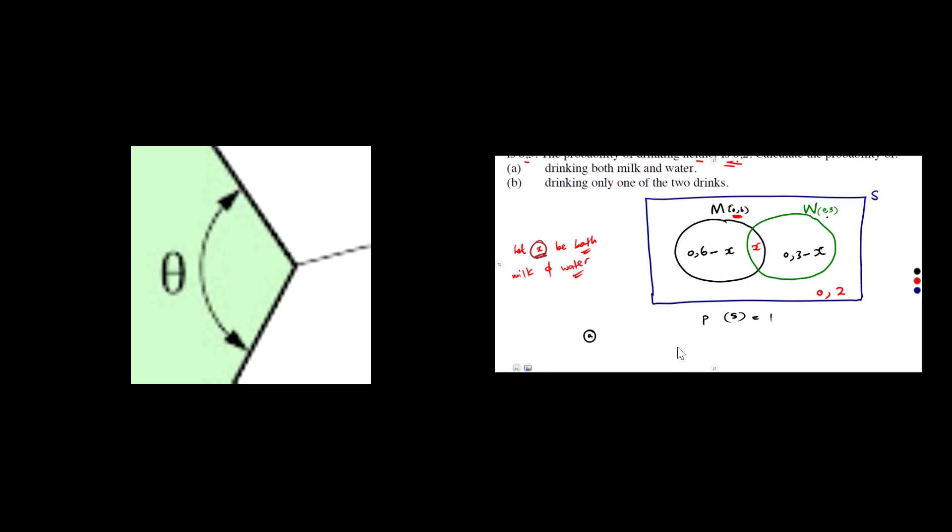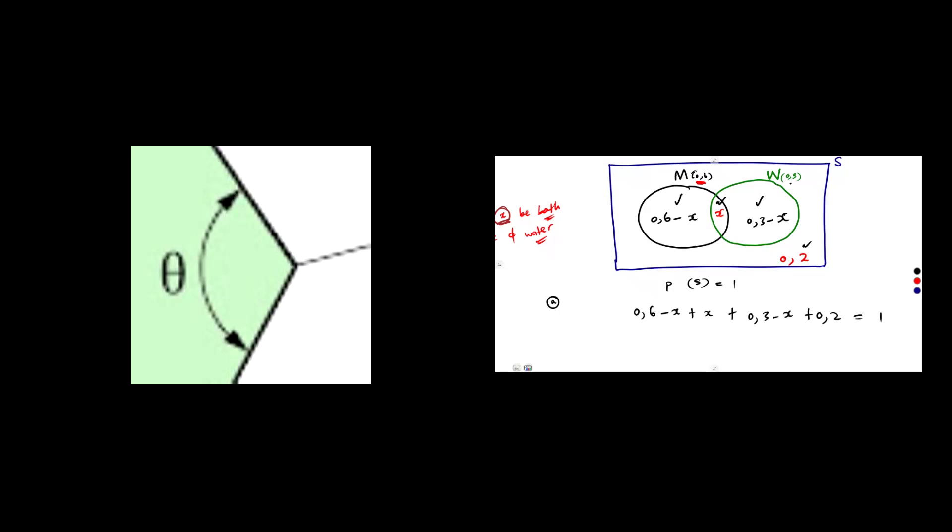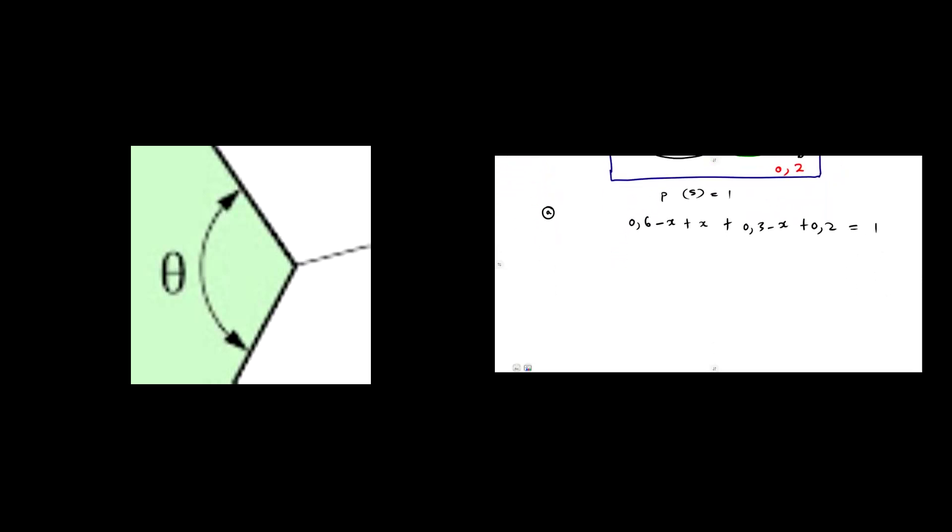So if we take this 0.6 minus X, we add it to this X, plus the 0.3 minus X, plus the 0.2 which is outside. If we add everything, that's our sample space, the probability must be 1. So we can solve for X because we have formed an equation. By solving for X, we are finding a quantity of taking both.